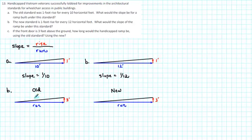So here we have the ramp. We have 3 feet of rise and we are trying to determine how much run we need for that 3 feet of rise. So we just use the formula. Slope is equal to rise over run. Well under the old standard we already determined that the slope is 1 tenth. So we write down the slope 1 tenth and that is equal to the rise which is 3 feet divided by the run. And what we need to do is to solve for the run.